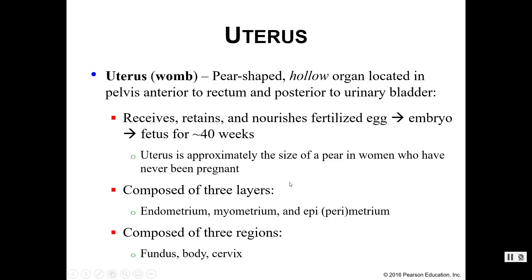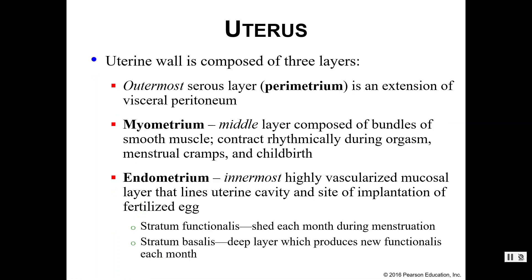The uterus has three distinct layers: the endometrium, the myometrium, and the perimetrium — or epimetrium, that's okay too. It also has three distinct regions: the fundus, the body, and the cervix. Starting with the layers: the outermost layer is the perimetrium, a serous layer because it is an extension of the visceral peritoneum, which helps hold the uterus in place. The middle layer is the myometrium — 'myo' means muscle — consisting of bundles of smooth muscle that contract rhythmically during orgasm, menstrual cramps, and childbirth.